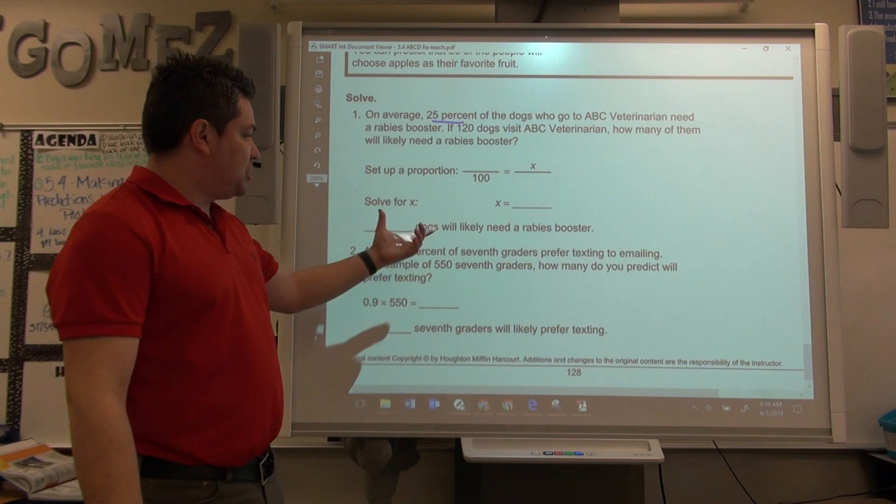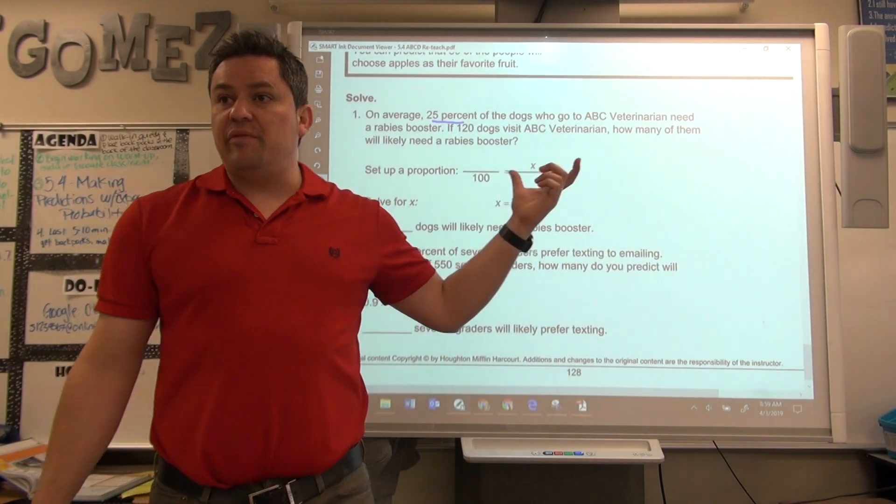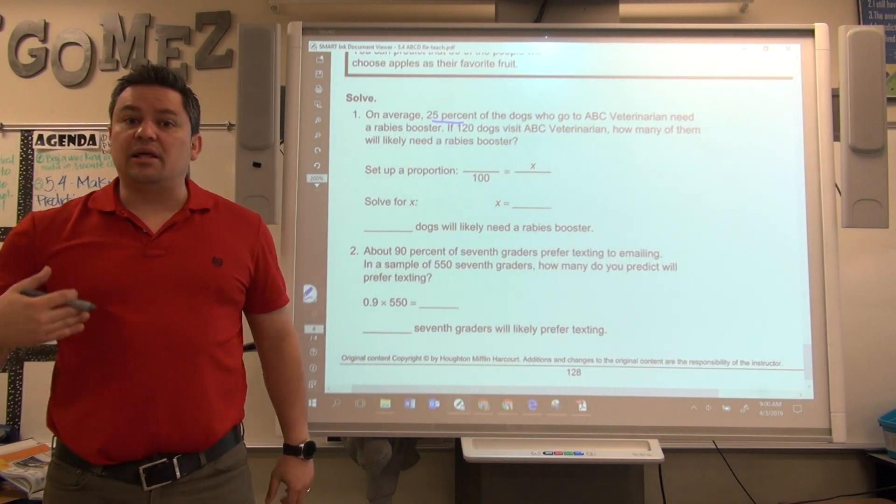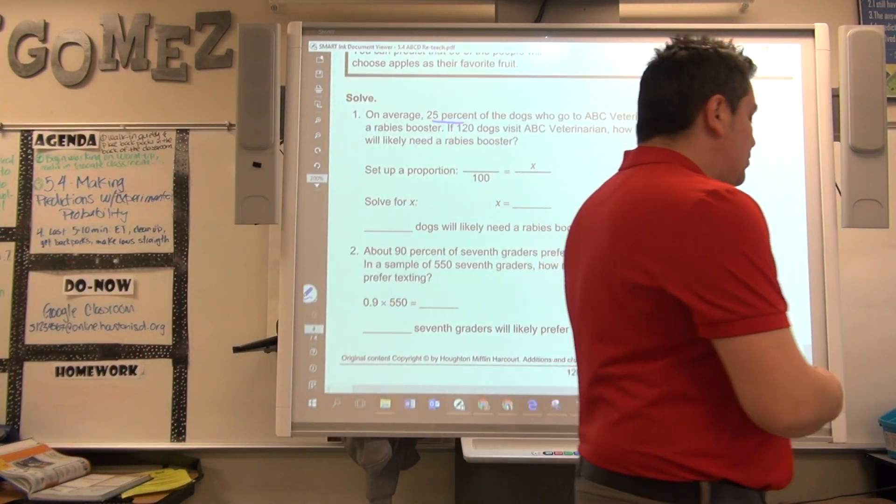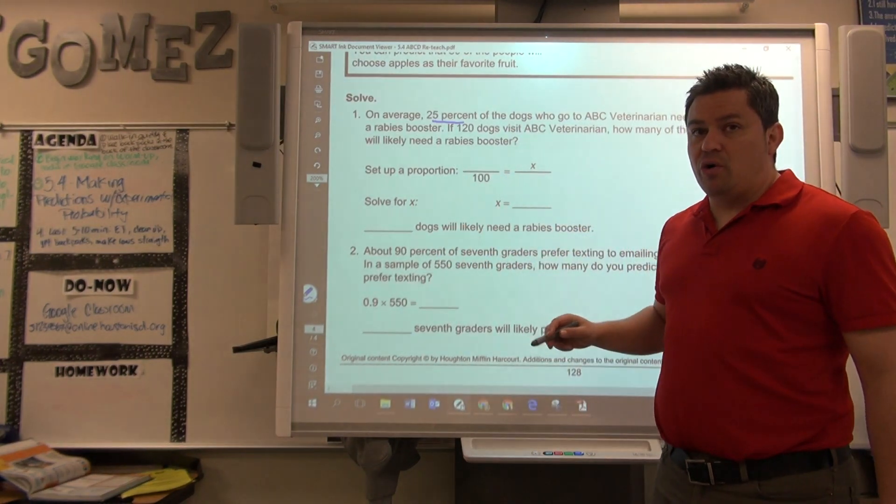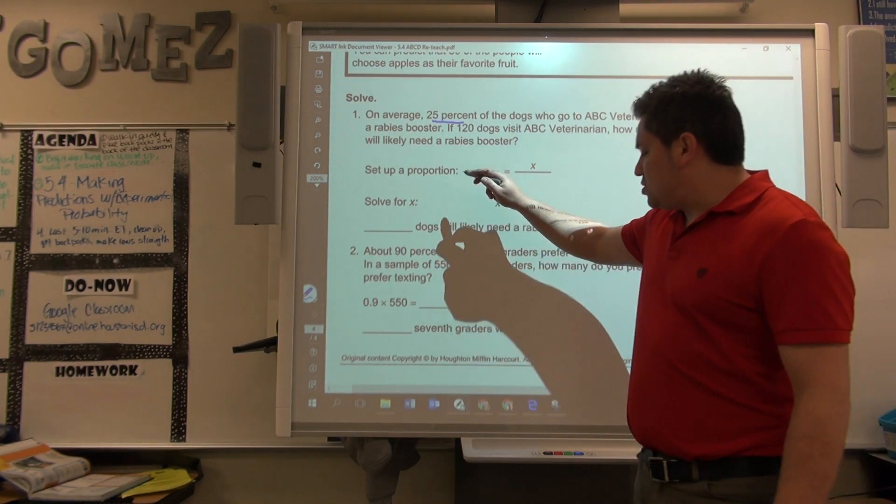So, we're going to use a proportion. In this case, they're not giving you the option to multiply, but I'm going to show you so that you can see that they're the same thing. So, we're going to set up the proportion. Remember, it's part over total. Part over total.